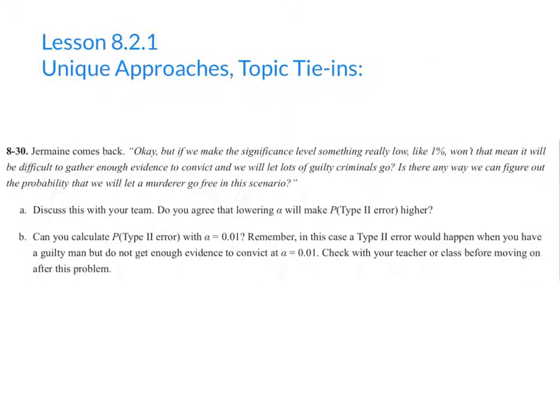Problem 8.30 lays the groundwork for the more complicated discussion of power in the next section. Students should realize that lowering the significance level will increase the probability of making a type 2 error, but should also realize that calculating the chance of making a type 2 error in the instance of a court trial is not really possible.